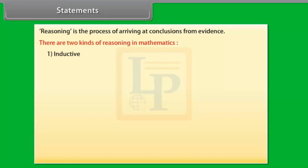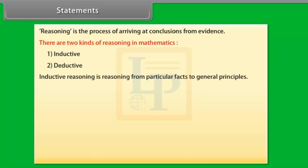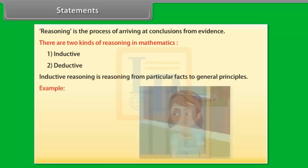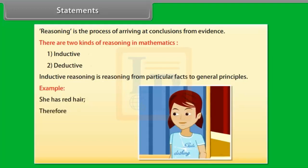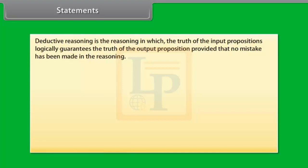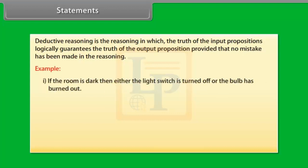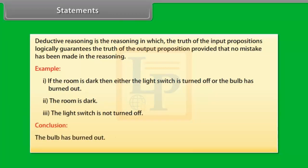Reasoning is the process of arriving at conclusions from evidence. There are two kinds of reasoning in mathematics: one, inductive; two, deductive. Inductive reasoning is reasoning from particular facts to general principles. For example, she has red hair, therefore she has a temper. Deductive reasoning logically guarantees the truth of the output proposition from input propositions. For example, if the room is dark, then either the light switch is turned off or the bulb has burned out. The room is dark. The light switch is not turned off. Conclusion: the bulb has burned out.